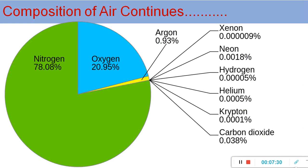The composition of air mainly includes different types of gases. Nitrogen is very high in concentration, constituting about 78.08%. After that, oxygen constitutes about 20.95%, then argon at 0.93%, then xenon, neon, hydrogen, helium, krypton, and the most important gas responsible for increasing atmospheric temperature — global warming and the greenhouse effect — is carbon dioxide, which constitutes about 0.038%.